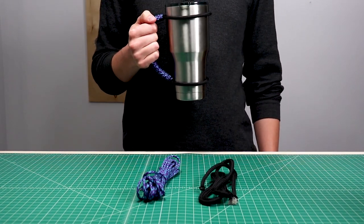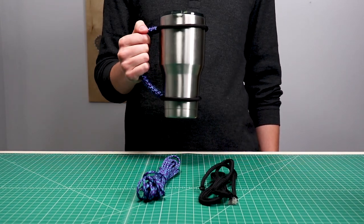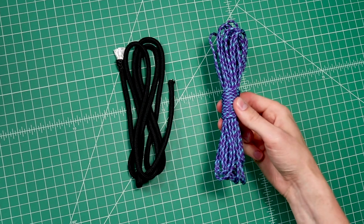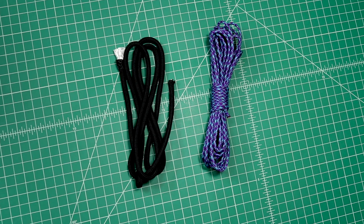Hi guys, welcome back to Paracord Planet. Today we're making this Yeti handle. It's going to use some quarter inch Paramax and about 20 feet of 550 Paracord. Let's dive right in.